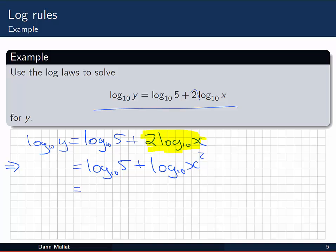Now I can combine the logs on the right to become the log of a product. Again, with the same base 10 log. We have 5x squared then. Now on the left I have log base 10 of y. And on the right, log base 10 of 5x squared.